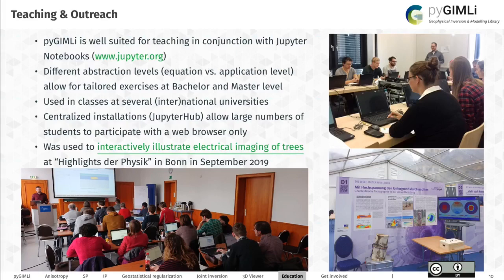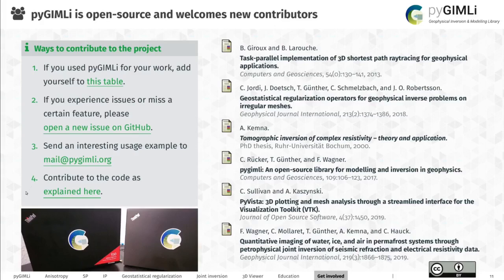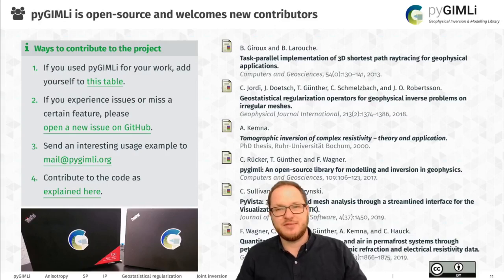PyGimli is open source, so feel free to contribute. There are different ways to contribute — you don't have to be a Python developer right from the start. You can let us know of interesting publications made or seen using PyGimli so we can add them to the database. If you experience an issue, feel free to open an issue on GitHub and we will respond as quickly as we can. We prefer this over email so that it's searchable and can help others. If you're willing to contribute to the code, we have an explanation of the steps necessary to do so linked here. Thank you for your attention, thanks to the conveners for the invitation, and I very much hope to see you in Vienna in 2021.